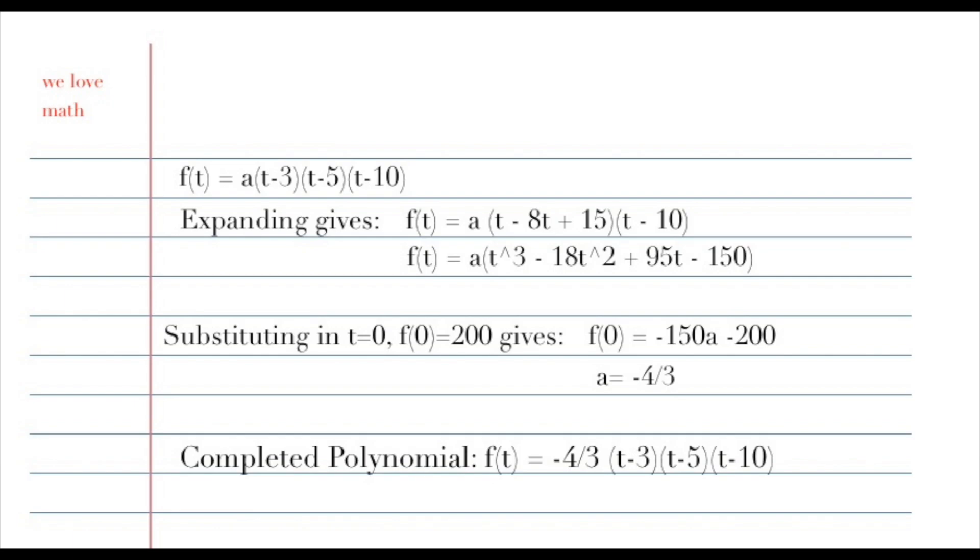Then we can substitute in t equals 0, f of 0 equals 200, and solve for a. a equals negative 4 thirds. So now this is our completed polynomial function.